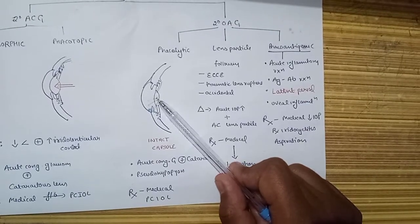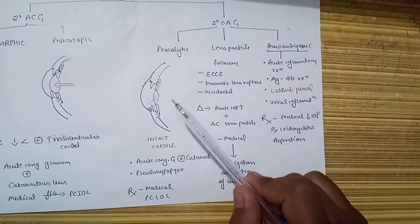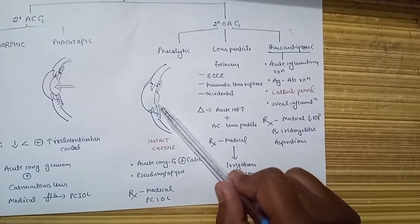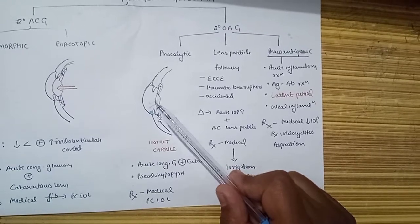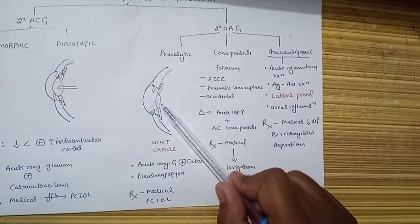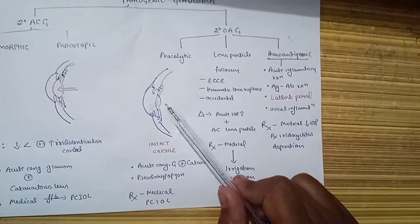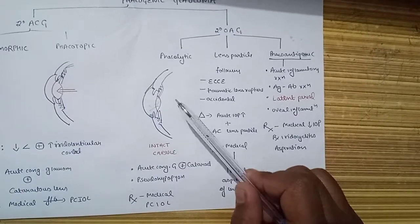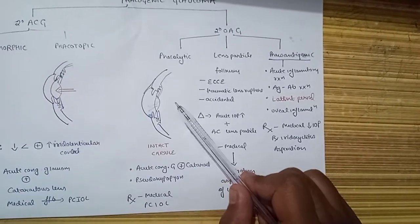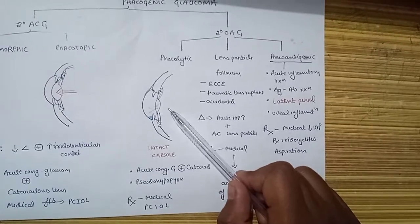This occurs in the presence of a morganian cataract which releases lens particles through an intact capsule. Diagnosis becomes easy by observing acute congestive glaucoma plus a cataract, and due to lens particles in anterior chamber, we may see pseudo-hypopion. Treatment involves medical management to control IOP, and later on a resting eye, we place a posterior chamber IOL.